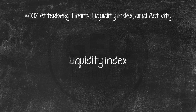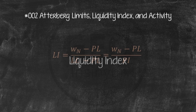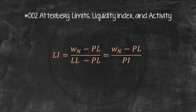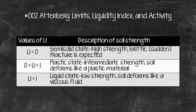The relative consistency of a cohesive soil can be defined by a ratio called the Liquidity Index (LI), defined by the equation where Wn is the natural moisture content. If Wn equals LL, then LI equals 1; if Wn equals PL, then LI equals 0. For a natural soil deposit in a plastic state (LL > Wn > PL), LI varies between 0 and 1. A natural deposit with Wn greater than LL will have LI greater than 1. In an undisturbed state, these soils may be stable; however, a sudden shock may transform them into a liquid state. Such soils are called sensitive clays.